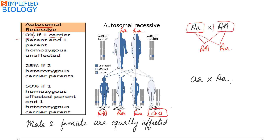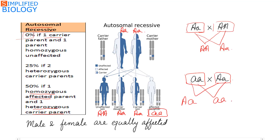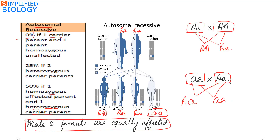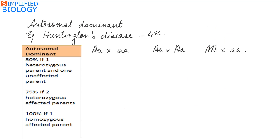In the third type — a homozygous affected parent and a heterozygous carrier parent — when the affected parent is homozygous and the other is heterozygous, 50% of the offspring produced will have the disease. In case of autosomal recessive genes, both males and females are equally affected. Next: autosomal dominant gene.